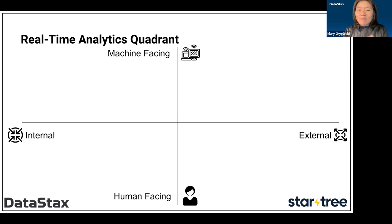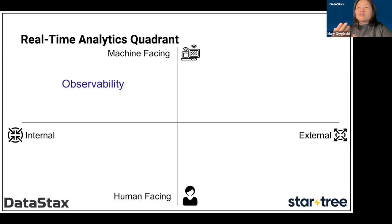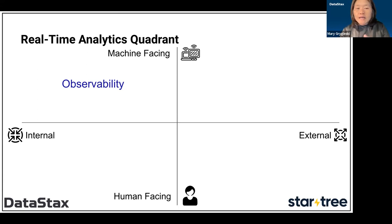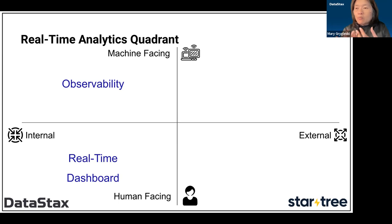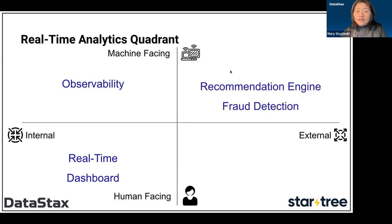I really like this quadrant from Mark. Real-time analytics divides into four pieces. Machine-facing is more about observability — monitoring cloud load, transactions over time. Then there's human-facing analytics, such as a store operator wanting a real-time dashboard showing sales figures. As we bring more complexity to the picture — more valuable for business — you get things like recommendation engines.